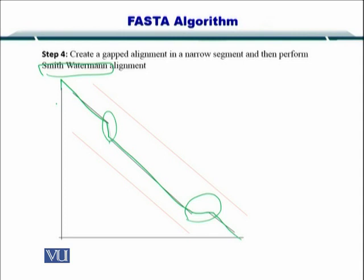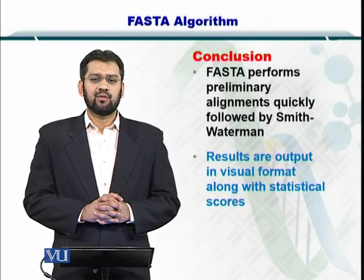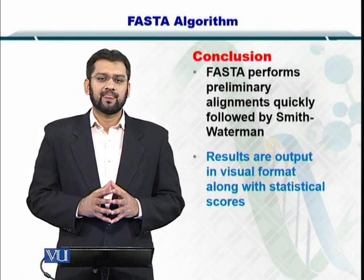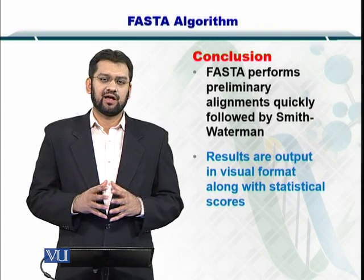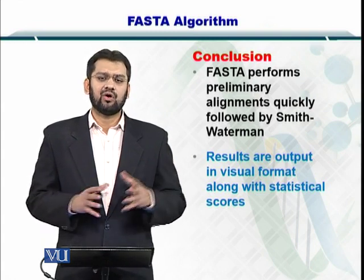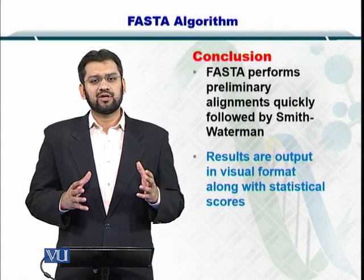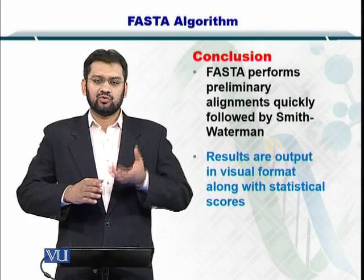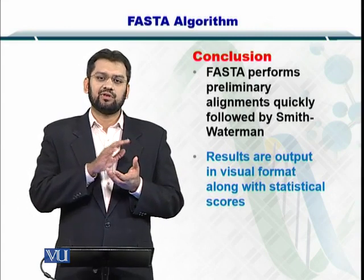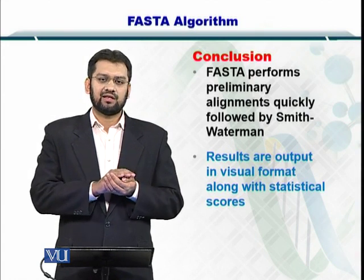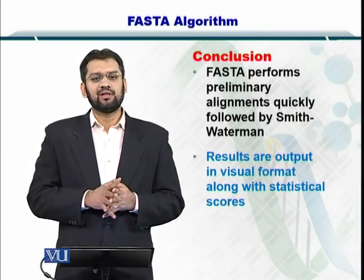In conclusion, FASTA performs the preliminary alignments by using a dot plot. Then you extend the diagonals that are contiguous, that are connected and very long. Once you have all such diagonals, you perform a threshold on the length of the diagonals and select only the best diagonals. These best, longest diagonals are then connected using the Smith-Waterman algorithm.